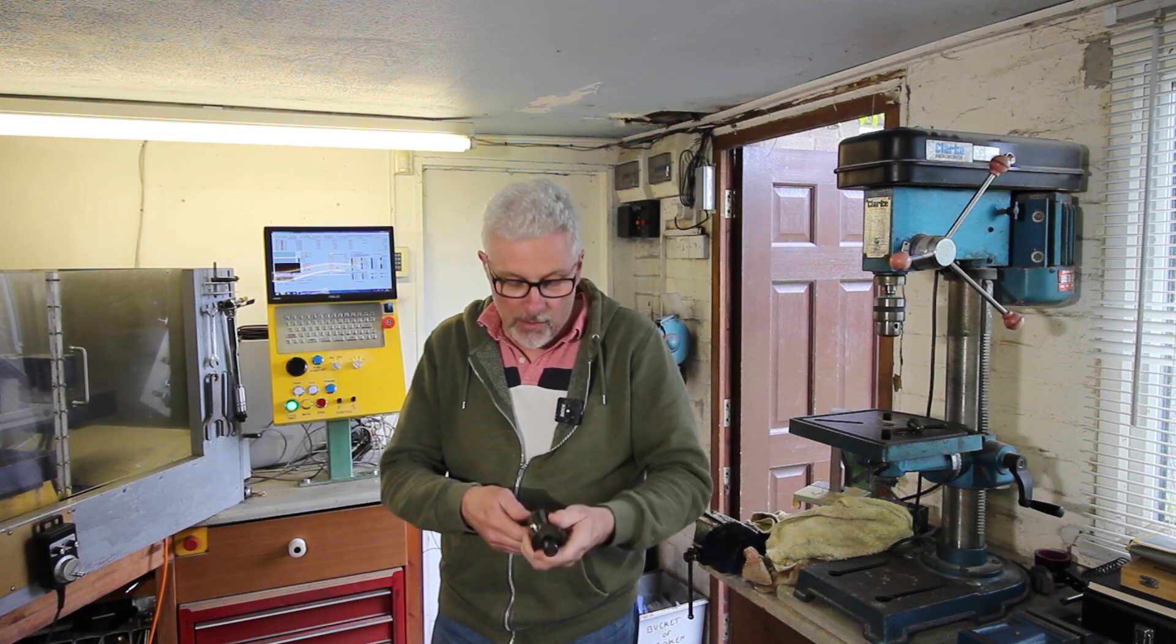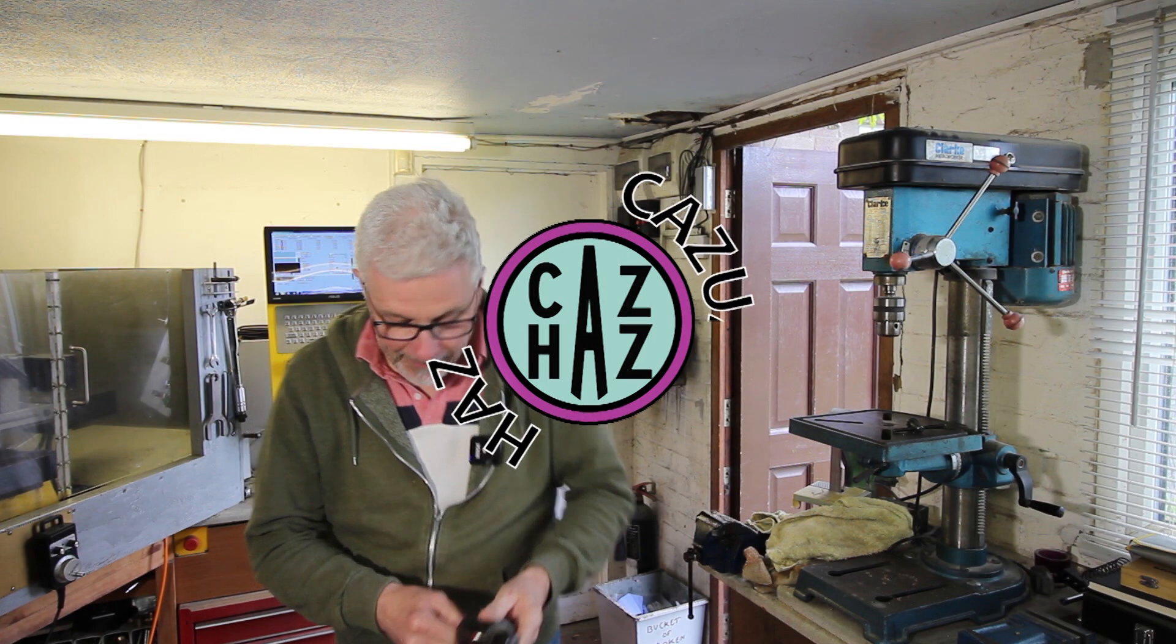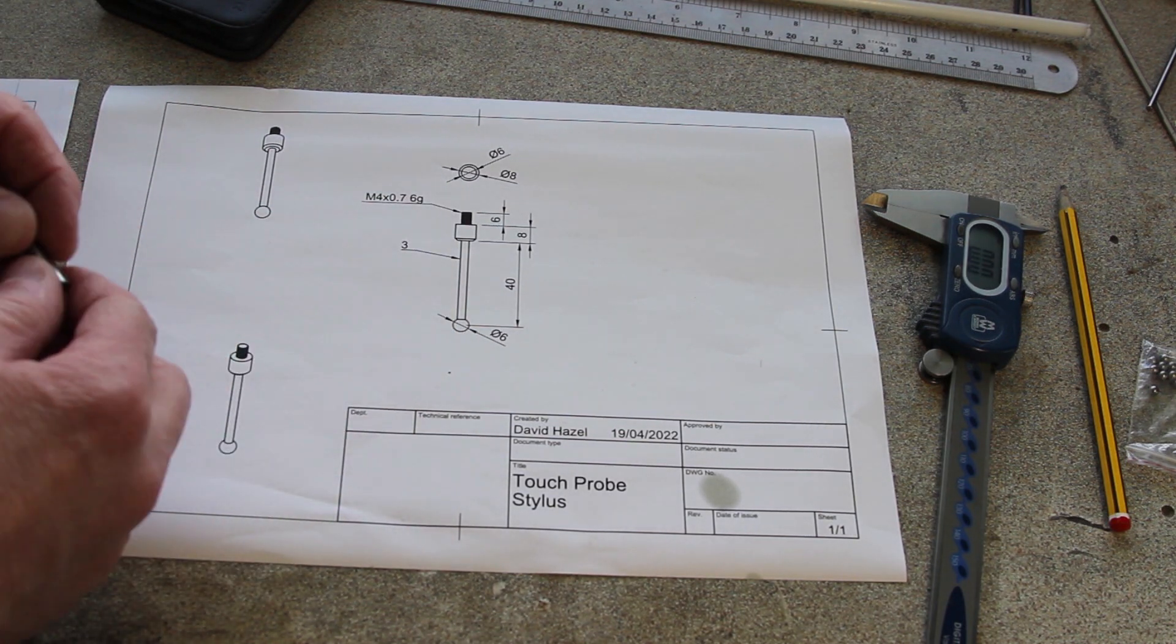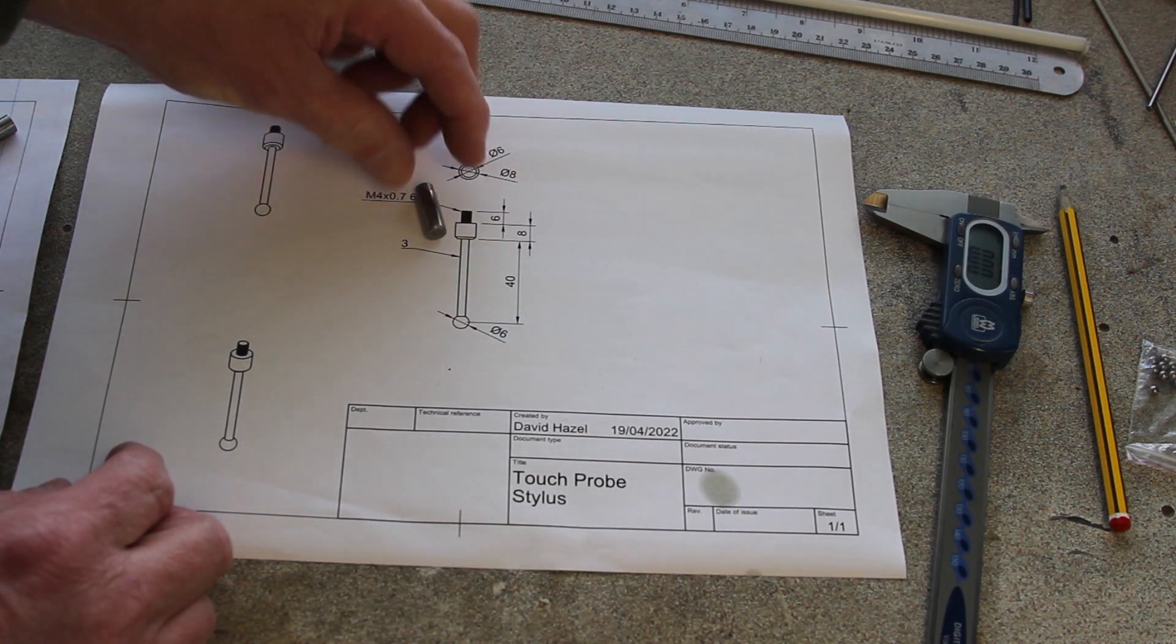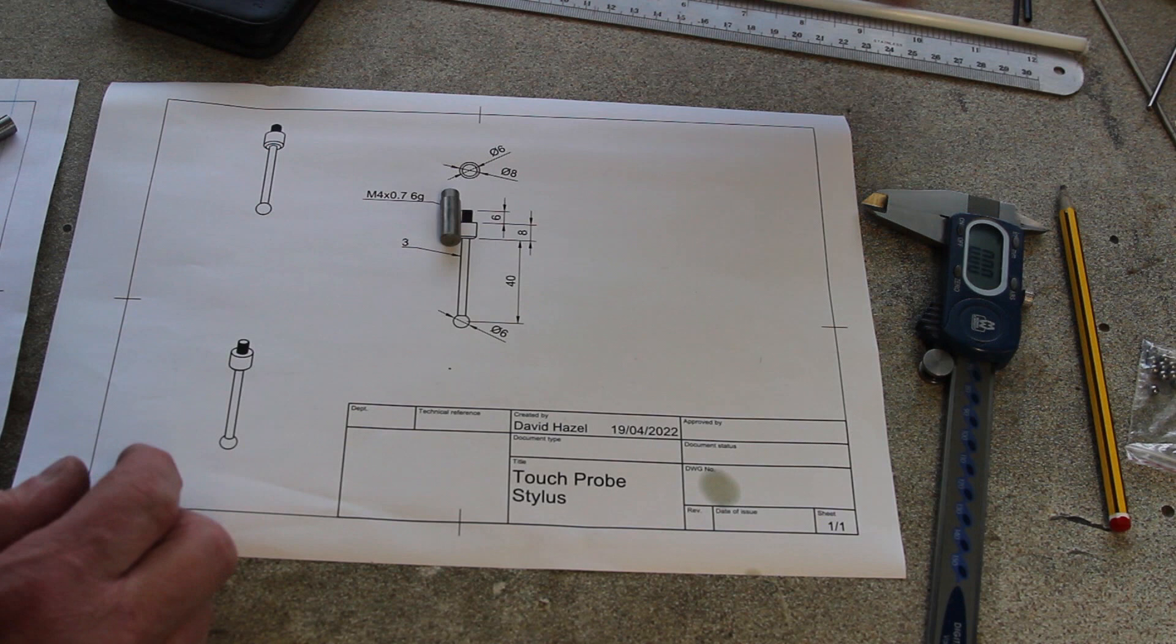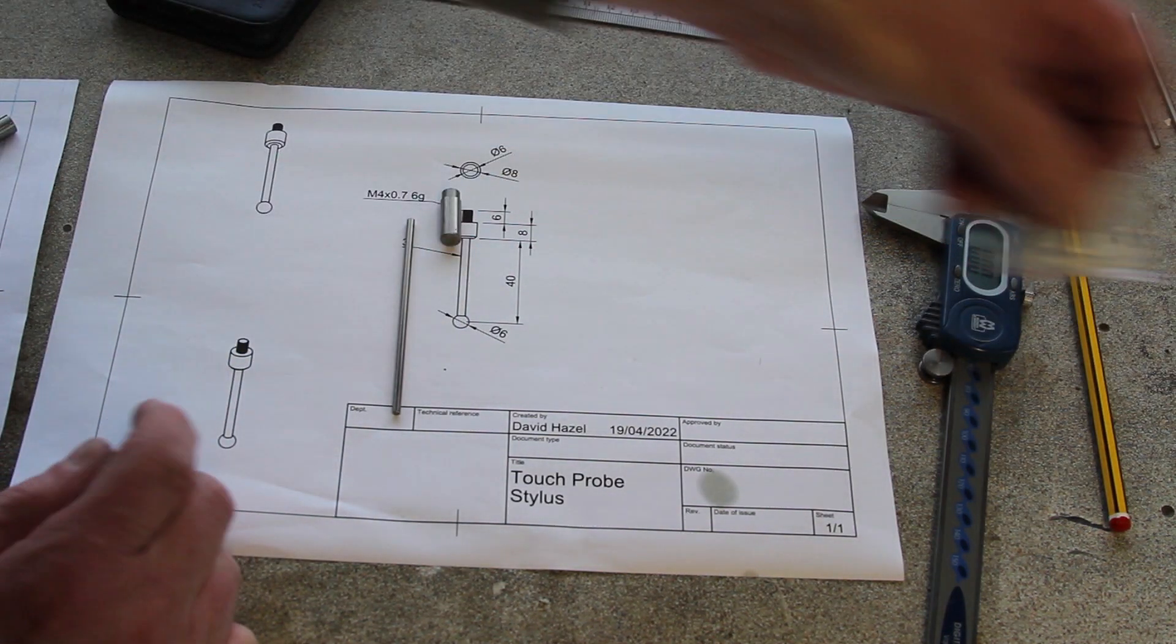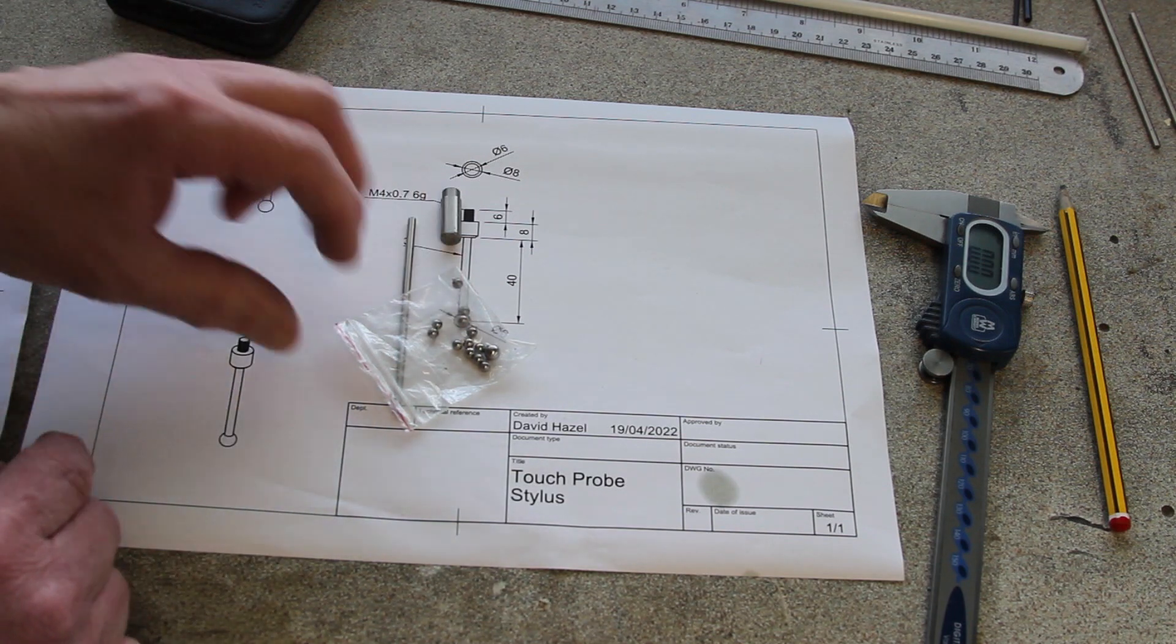So let's have a quick look. Next up, I'm going to have a go at making my own touch probe. I've got a piece of silver steel that's eight millimeters in diameter for the base, one of these bars from a DVD player will make the stem, and there's a six millimeter stainless ball bearing in the packet of ball bearings.